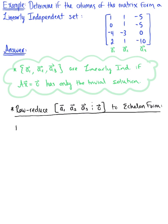So here we have the matrix. The first column vector is 1, 0, negative 4, 2. The second column vector is 1, 1, negative 3, 1. And the third column vector is negative 5, negative 5, 0, negative 10.